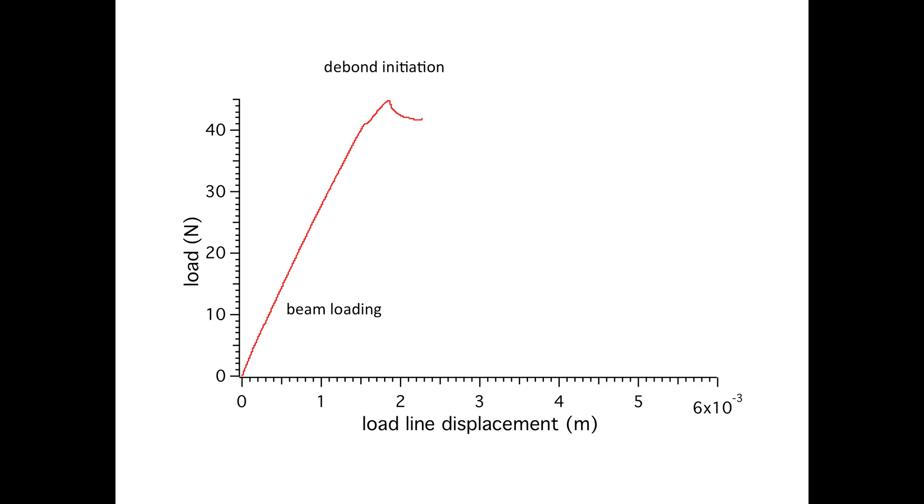Once the debond has been created, it will propagate further with displacement of your beam at a unique plateau load. This is stable debond propagation. Now you want to let your debond propagate until it travels about a half to two thirds of your beam's length before concluding the test.